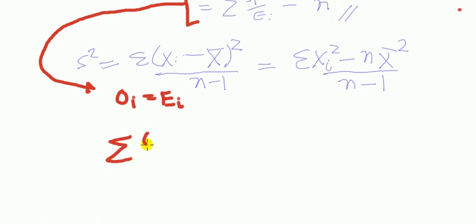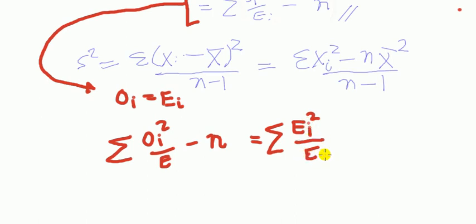Guys, look. Sum of O_i squared over E_i minus n. If the null were true, I mean, if O_i is equal to E_i, which means that the null is true for sure, just replace that O_i by E_i because they're the same thing. So, that would be sum of E_i squared over E_i minus n.